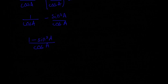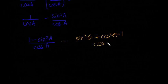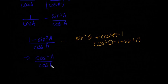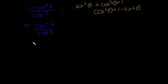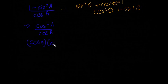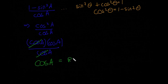Now, 1 minus sine squared(a) — we remember that sine squared θ plus cos squared θ equals 1, so cos squared θ equals 1 minus sine squared θ. That means 1 minus sine squared(a) is equal to cos squared(a). So we now have cos squared(a) over cos(a). Writing that out: cos squared(a) is cos(a) times cos(a), divided by cos(a). One factor of cos(a) cancels on top and bottom, and we're left with cos(a), which equals the right-hand side. The question is done.